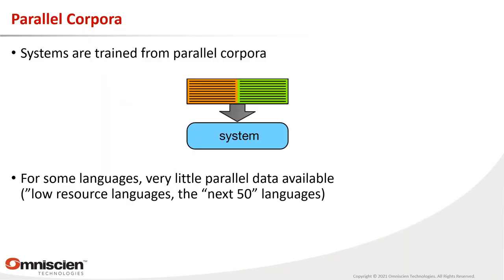Multilingual models are another trend that fits into the data situation. Systems are typically trained on parallel corpora for one language pair. That works well with lots of data, but for low-resource languages — not the top 5 to 10, but the next 50 or 100 — it becomes very difficult because there is very little parallel data available.